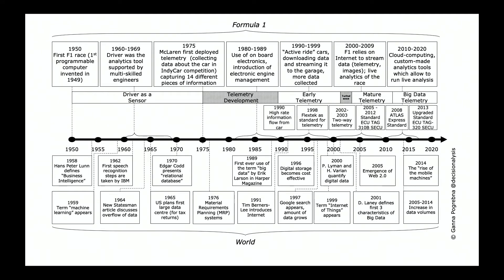By 2000, we had various types of digital data. In 1999, we also saw the introduction of the term internet of things. What was happening in Formula One at the same time was basically high-rate information flow from the car from 1990. By 1996, a flag stack became a standard for telemetry. From 1990 to 1999, active ride cars were downloading data and streaming it to the garage, with more data collected before and after the race during testing.